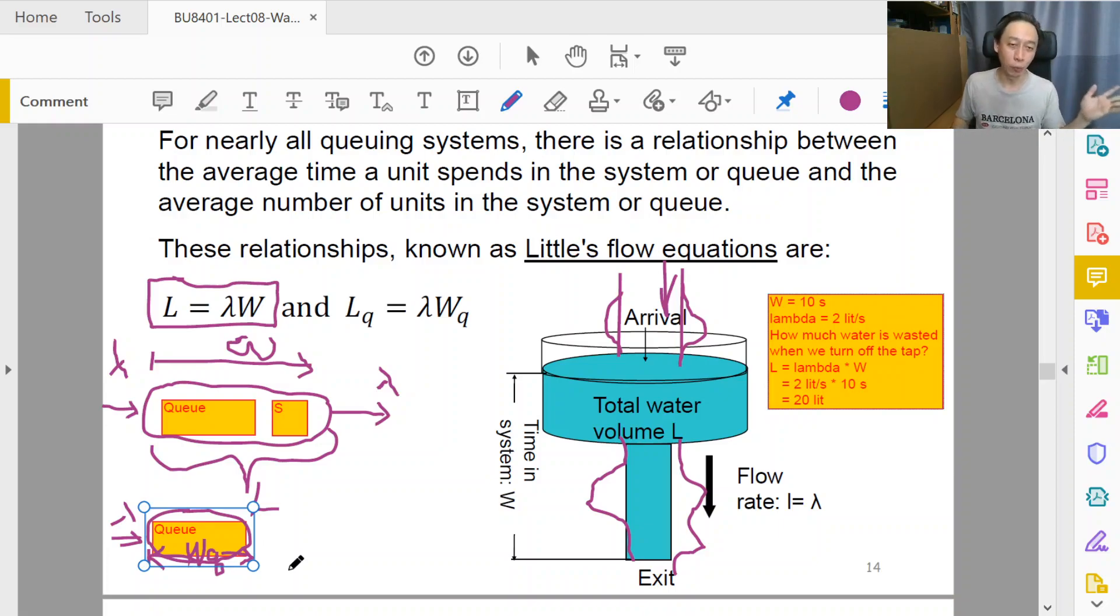it takes WQ seconds or minutes for the entity to wait through the queue on average. Sometimes some entities may wait longer, some entities may not wait at all, but on average it is of timing WQ. Then we ask, how long is the queue?